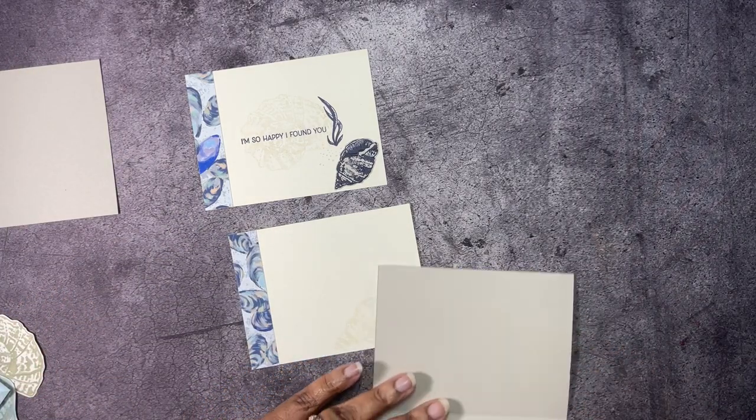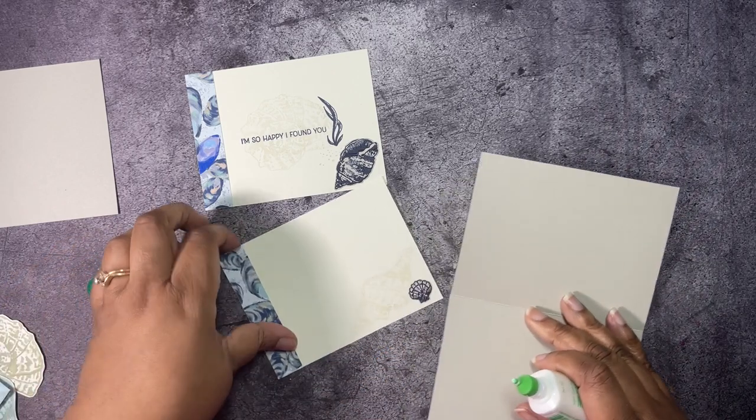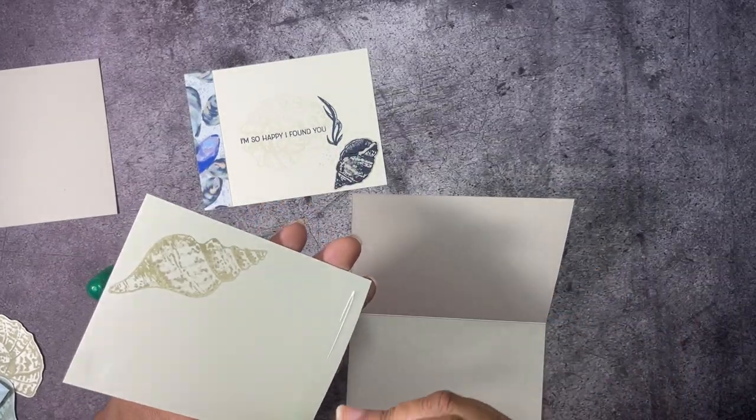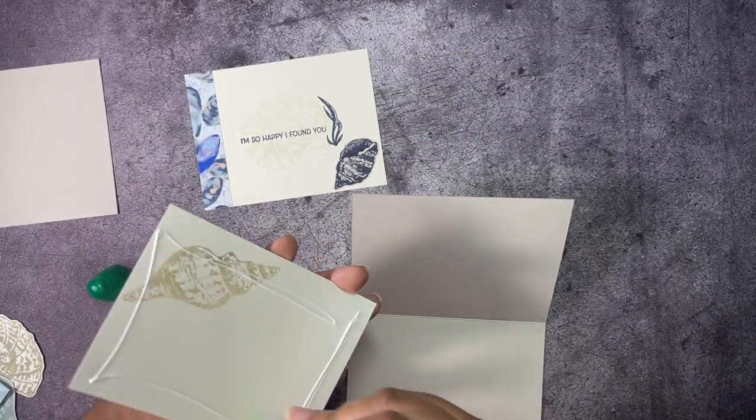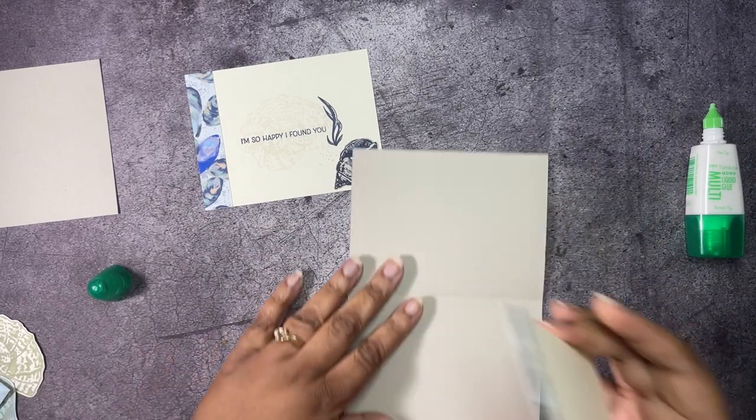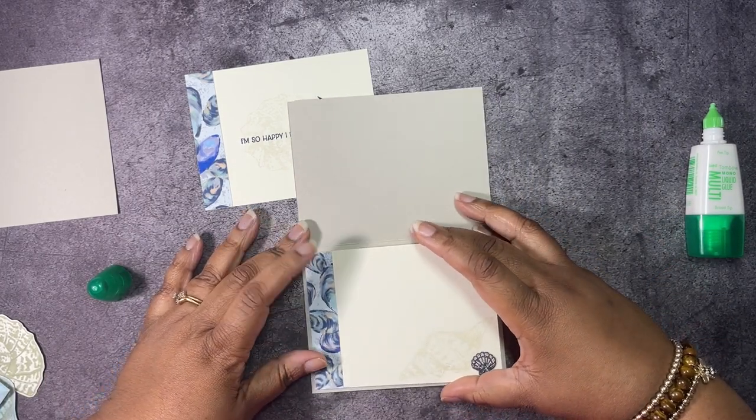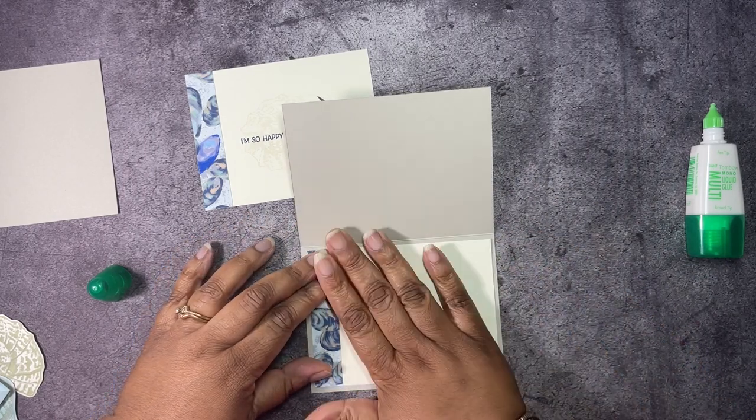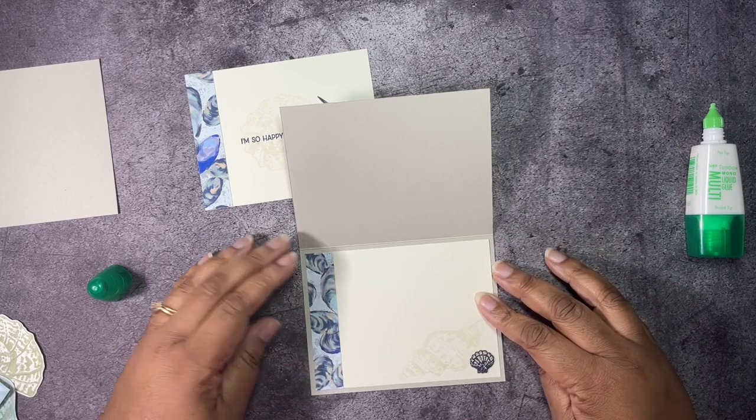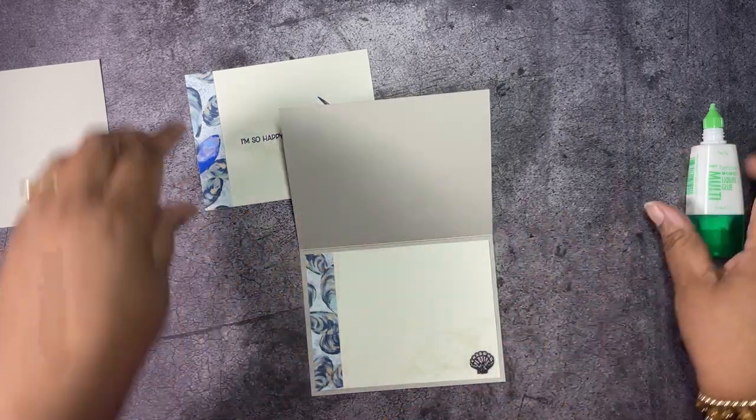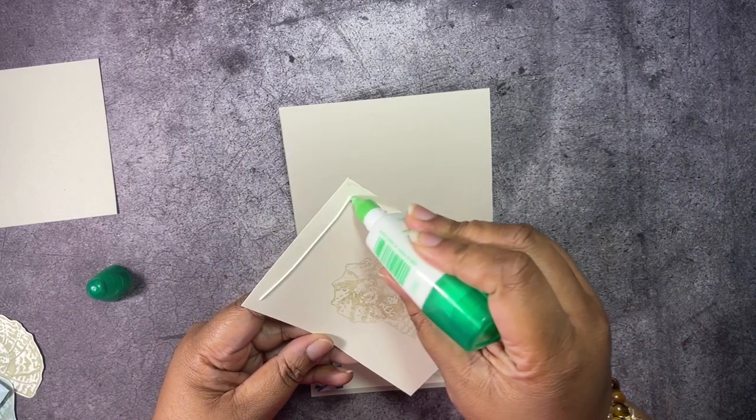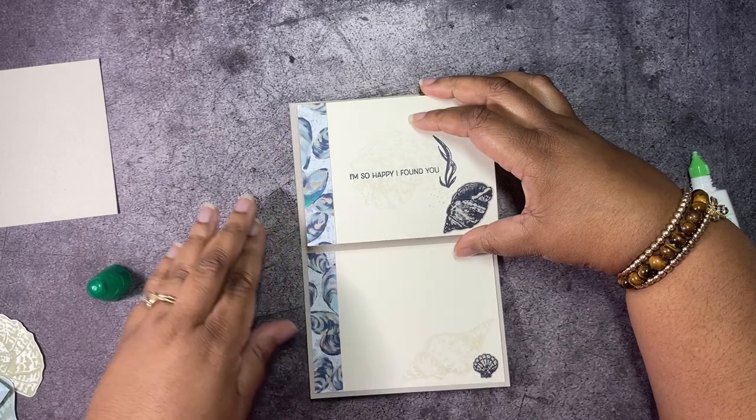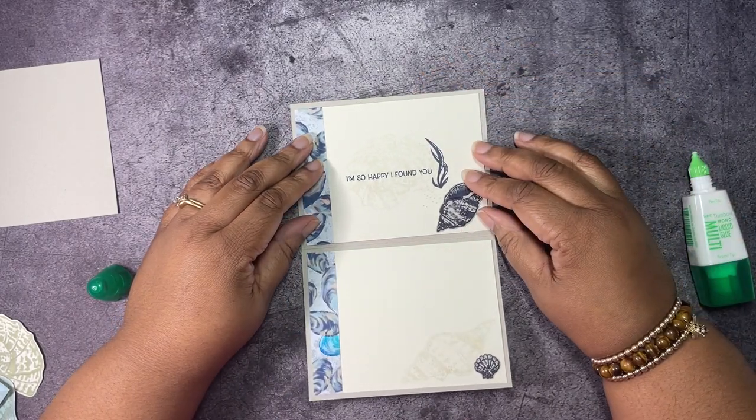We're just gonna go ahead and glue those inside of our card here. This one is gonna go, as you can see that's where I stamped first and I didn't like how bold it was, so I thought I need to stamp off twice. We're gonna just center this right here, just like this, stay centered. Then we're gonna put this one on the top.